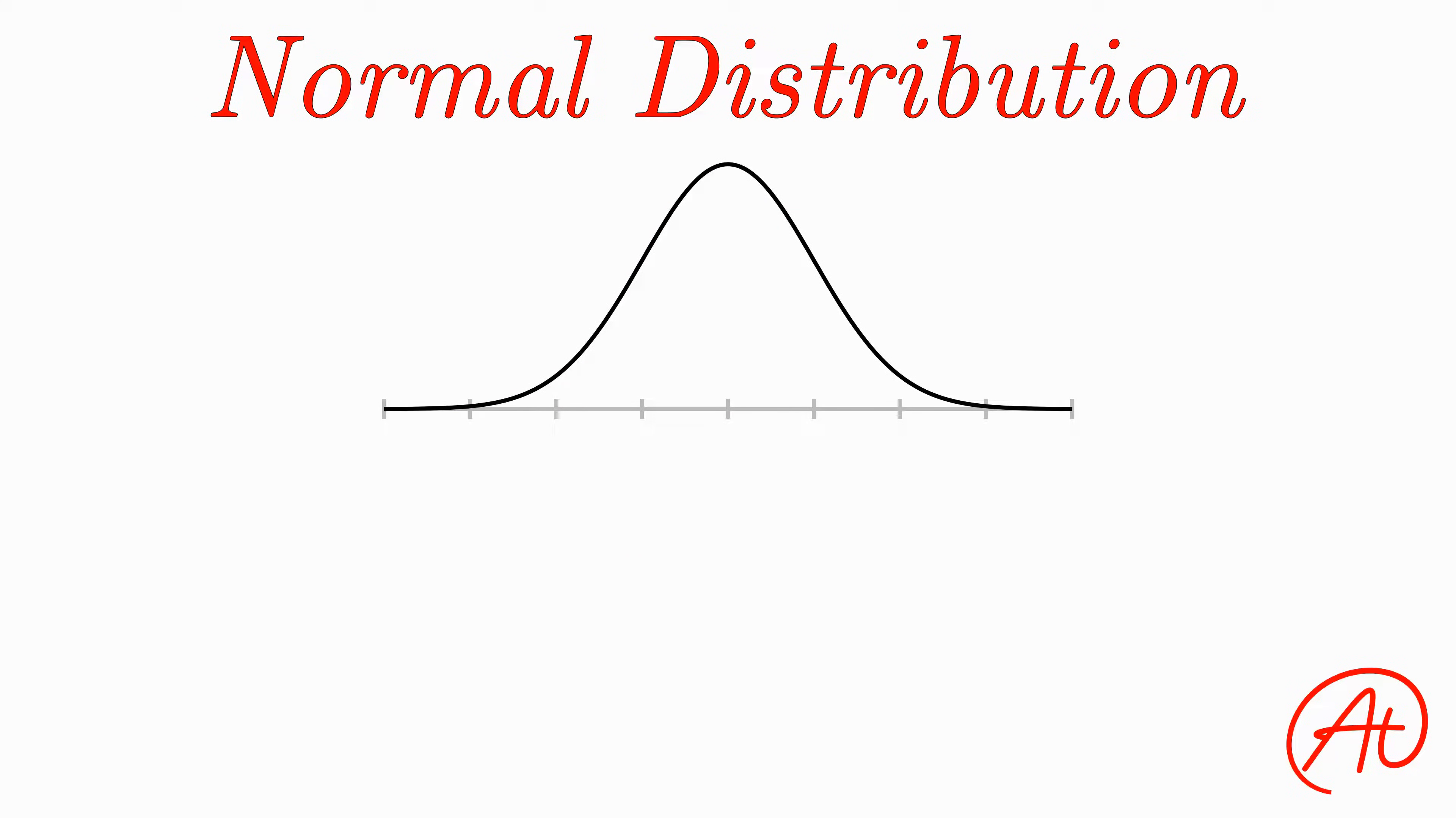First of all, a normal distribution looks like this symmetric bell-looking thing, which is why it's often called a bell curve. Now this curve is centered around the distribution's mean and spreads out with decreasing probability as you move away in either direction.